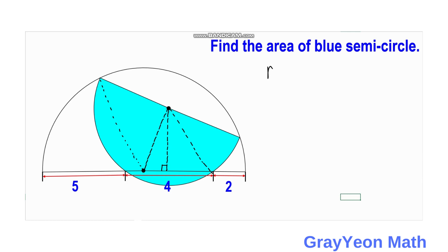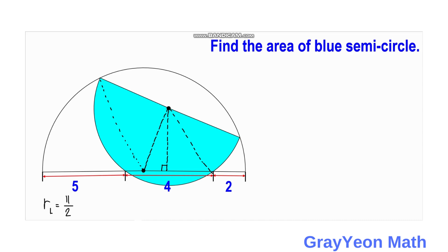r_L is equal to (5 + 4 + 2) all over 2, and that would be r_L = 11/2. We label this length as 11/2 since it is the computed radius of this larger semicircle. Next, we label the radius of this smaller semicircle as r_S.